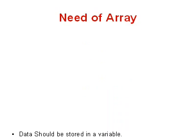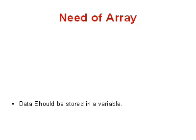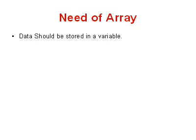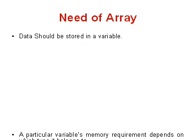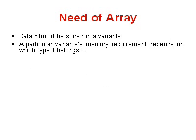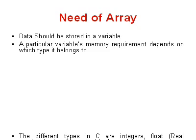First we need to understand what is the need of an array. As we know, when you make a program, whatever data you store should be stored in a variable. Now a particular variable's memory requirement depends on which type it belongs to. That means different types of variables have different memory requirements — some need two bytes, some need four bytes, some need six bytes, etc.